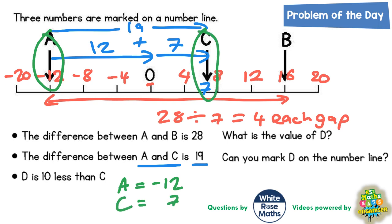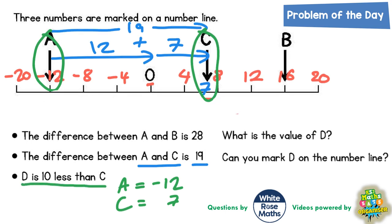And we're told the last clue that D is 10 less than C. So 10 less than C would be 10 less than seven. So we need to start on seven and make that 10 less. In other words, we need to go down 10. So minus 10 from seven.